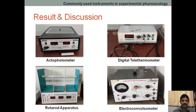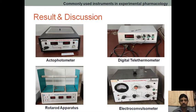After giving the drug, if the mice falls quickly, that indicates muscle relaxant activity or CNS depressant activity. The rota-rod apparatus is commonly used for evaluating muscle relaxant activity.